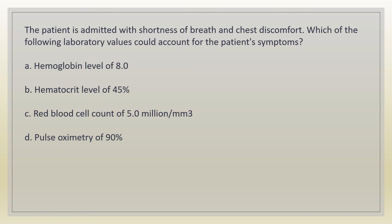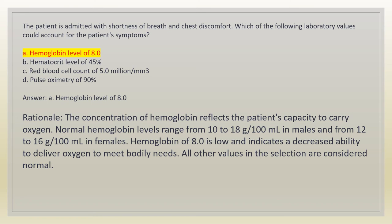The patient is admitted with shortness of breath and chest discomfort. Which of the following laboratory values could account for the patient's symptoms? a. Hemoglobin level of 8.0. b. Hematocrit level of 45%. c. Red blood cell count of 5.0 million per cubic millimeter. d. Pulse oximetry of 90%. Answer: A. Hemoglobin level of 8.0. Rationale: hemoglobin of 8.0 is low and indicates a decreased ability to deliver oxygen to meet bodily needs. Normal hemoglobin levels range from 10-18 g/100 mL in males and 12-16 g/100 mL in females. All other values listed are considered normal.